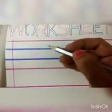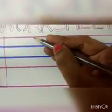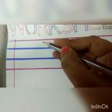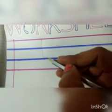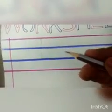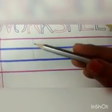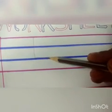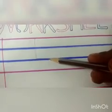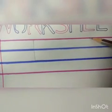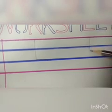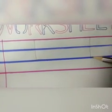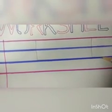Let's start, nursery class. How to write letter L? Start from the pink line — this is the starting point — and go to the blue line, the third line. Then make a sleeping line on the third line. With the help of a standing line and a sleeping line, we can write letter L. Once again: start from the pink line and go to the blue line, third line, then make a sleeping line on the third line.